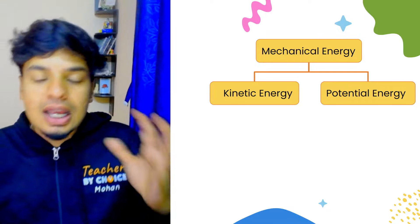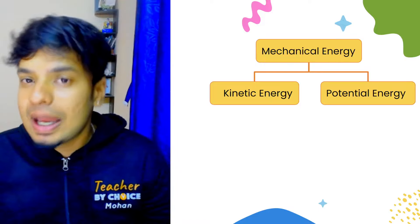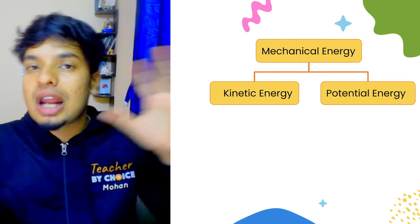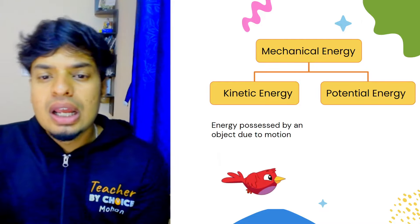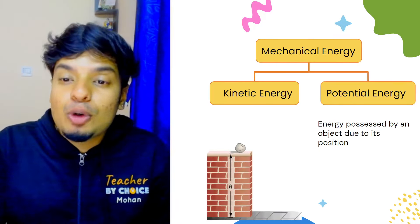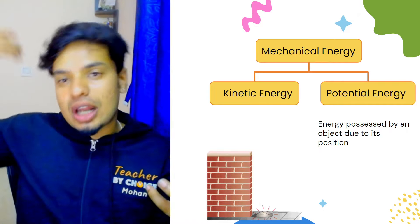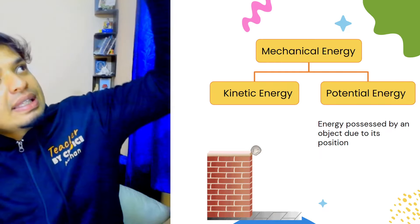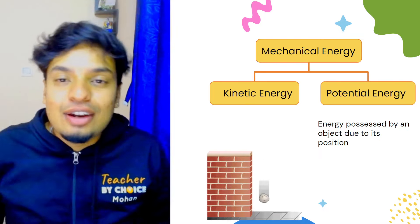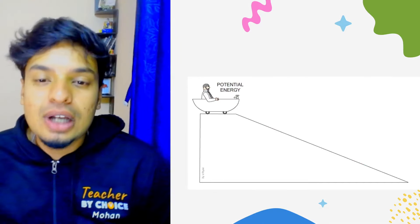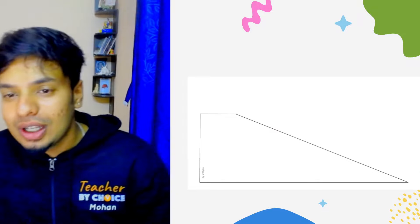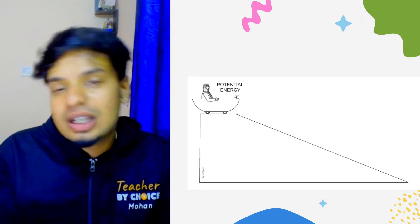When we specifically talk about mechanical energy, we have two types which we've already discussed: kinetic energy and potential energy. Energy possessed by an object because of its motion is called kinetic energy, and energy possessed by an object because of its position is potential energy. For example, if I'm holding this here, it now has potential energy because of its position. If I drop it, it gains kinetic energy and falls down. Look at this: the person on the slope has potential energy. When he starts coming down, he gains kinetic energy.